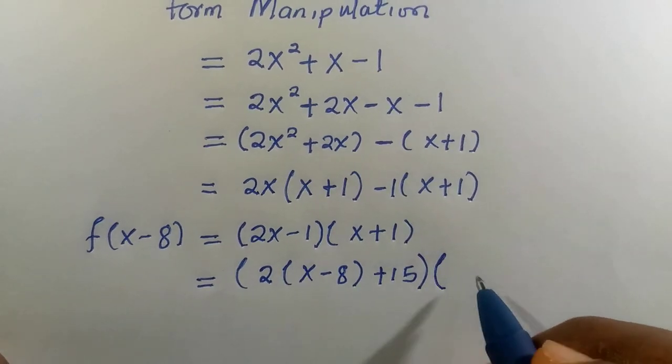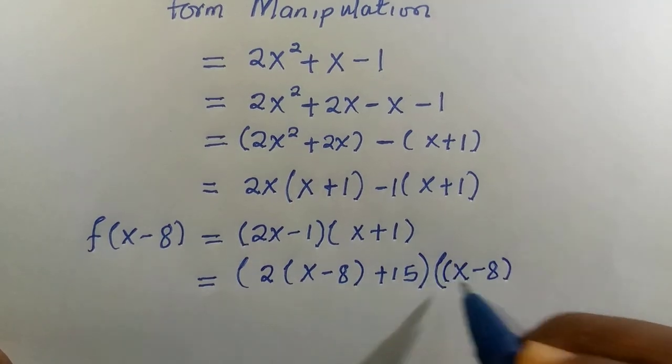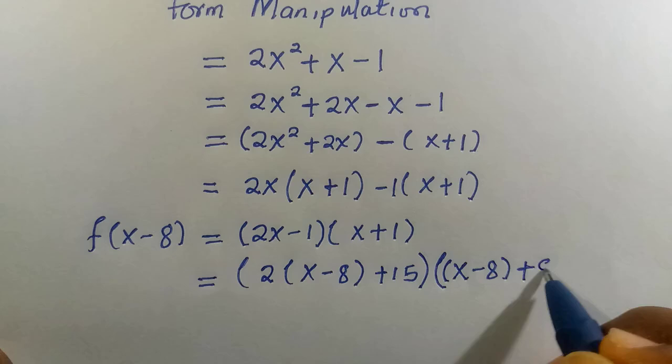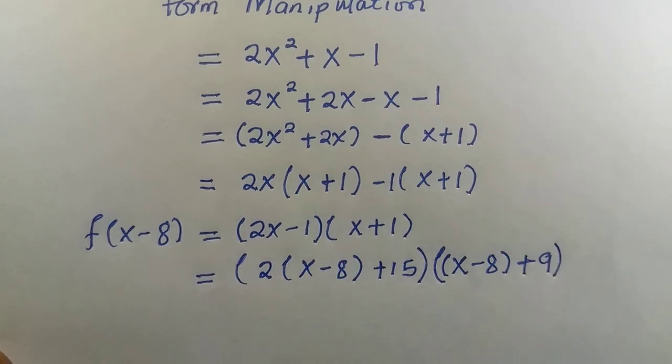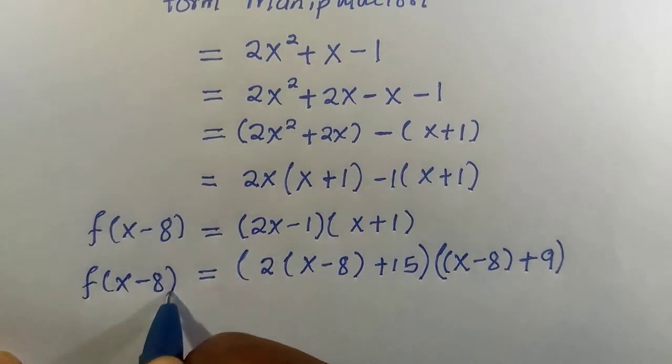For the second one, we have x - 8, and what this one is also missing to get +1 is just 9. Therefore, everything is equivalent to f(x-8).